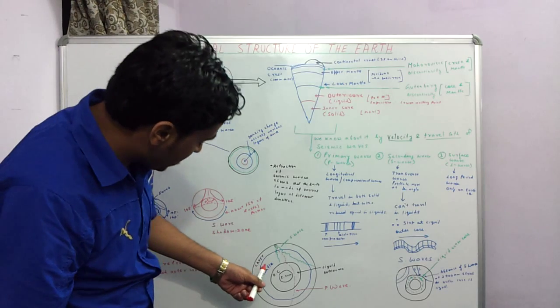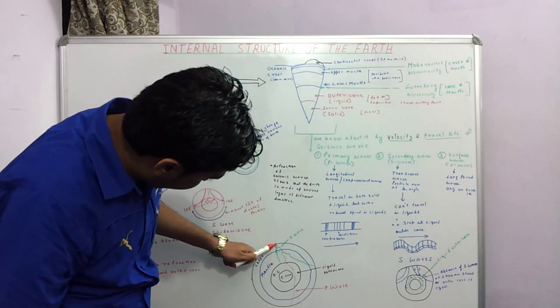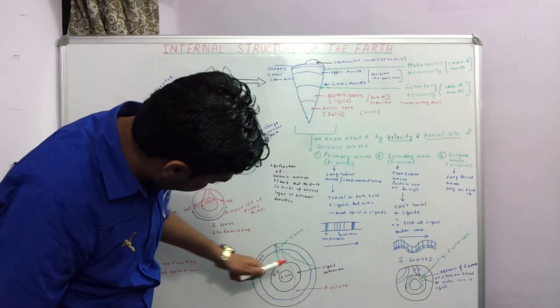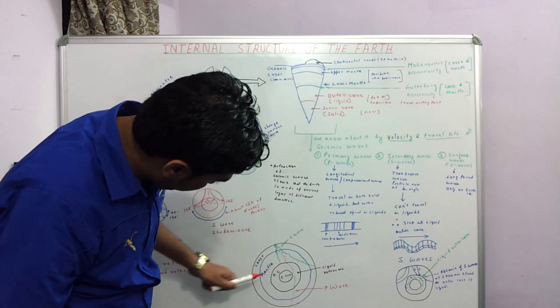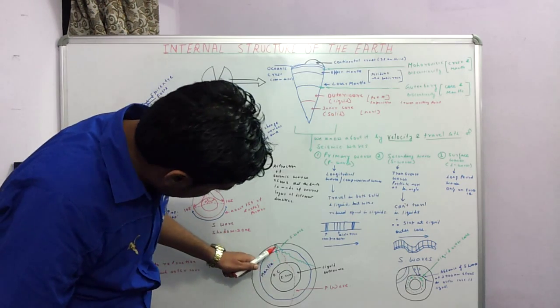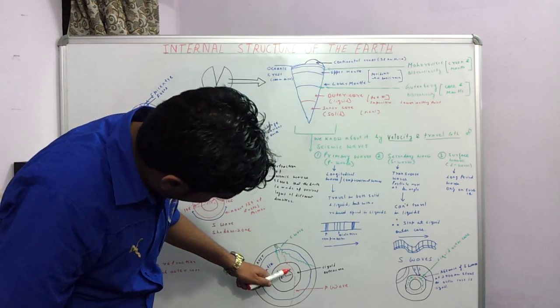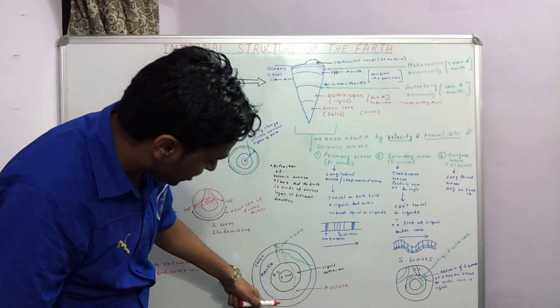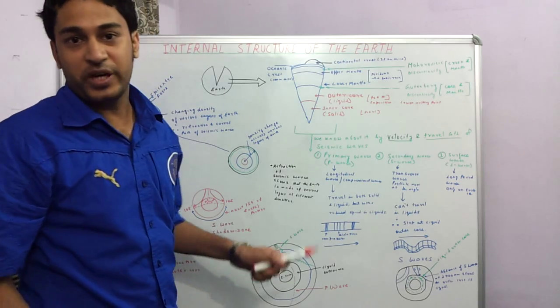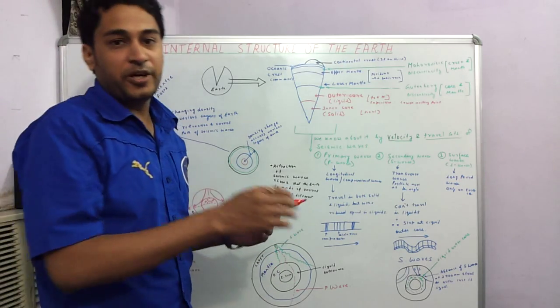This can be further understood in a different diagram. Here, the S waves have gone through the crust and the mantle but stopped at the outer core. Whereas the P waves have passed through the outer core as well, but they have suffered refraction. This refraction happens whenever a wave travels in a different density.